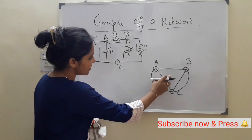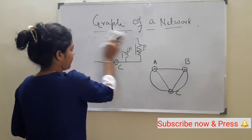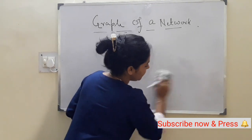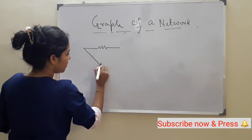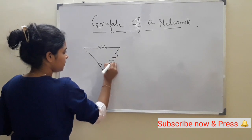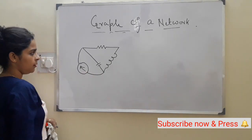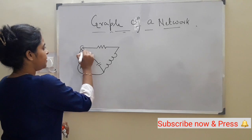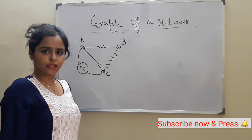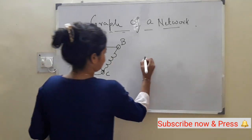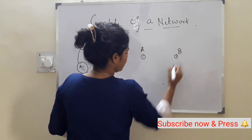So this is the graph of this network. Now I am drawing another network containing a current source — seeing this will make your idea totally clear. This is another network where I am giving a current source. Node A, node B, and node C. In our graph we also have to draw 3 nodes: A, B, and C.